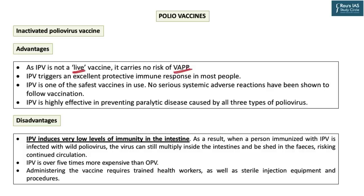Although live attenuated vaccines cause the highest immune response, inactivated polio virus vaccines also trigger an excellent protective immune response in most people. The effectiveness may be slightly less but it is very, very safe — no serious adverse reaction has been shown anywhere in the world following IPV vaccination. IPV is highly effective in preventing paralytic disease. However, since IPV goes into the bloodstream, it induces very low immunity in the intestine. As a result, when a person immunized with IPV is infected with wild polio virus, the virus can still multiply inside the intestine and be shed into the environment through fecal material, raising the risk of continued circulation.